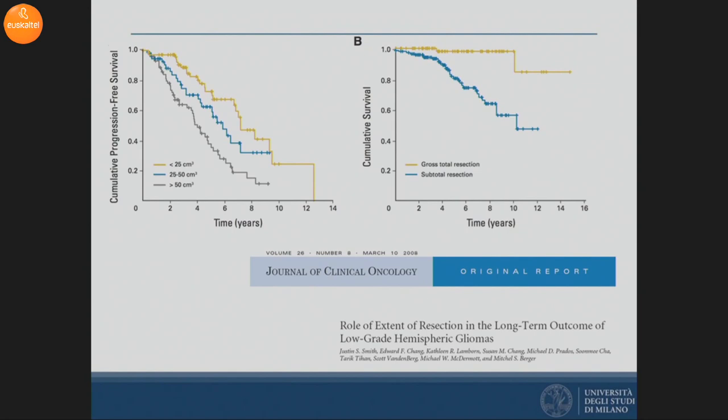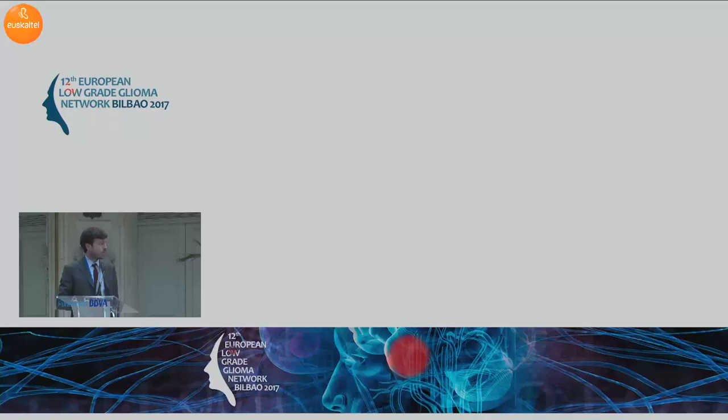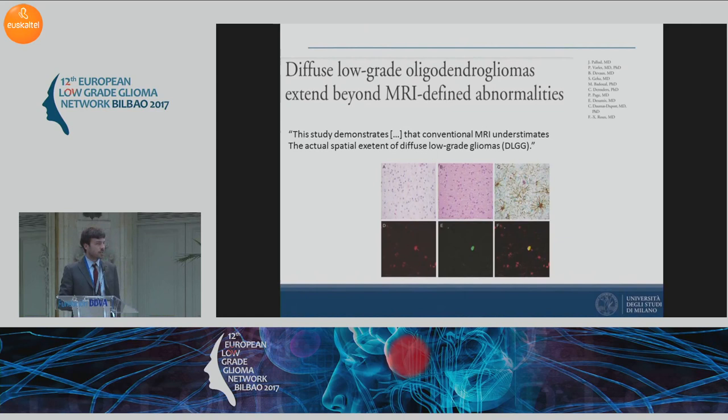As explained by the group of Berger, patients in which gross total resection was obtained had longer progression-free survival and overall survival compared to a group in which only sub-total resection was obtained. The group of Palud demonstrated the presence of glioma cells outside the MRI abnormalities, and this is perhaps the reason why this disease has the tendency to relapse despite a total resection.